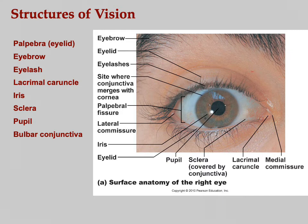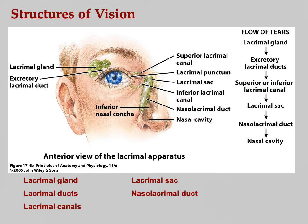The lacrimal gland sits on the lateral superior surface of the eyeball and produces tears. The tears reach the eye through the lacrimal ducts and are spread across the eye when you blink — just like windshield wipers. Tears clean the eye and contain antibacterial substances to help prevent infections like conjunctivitis.